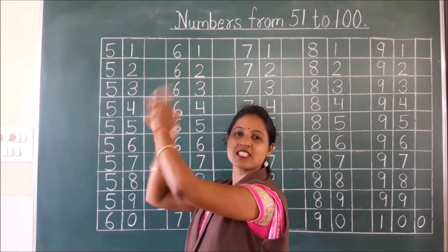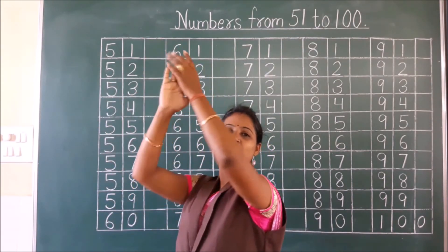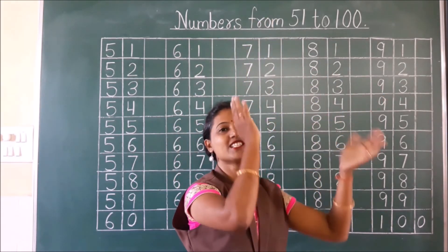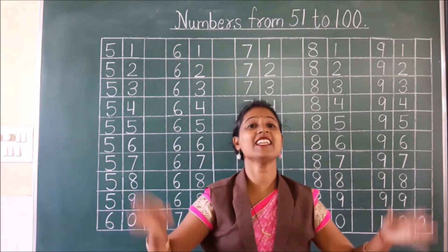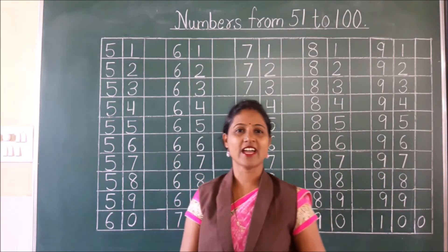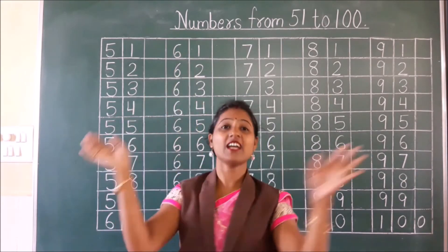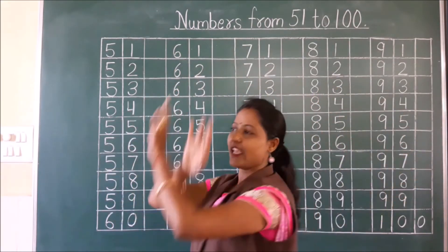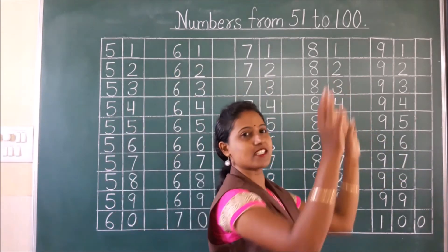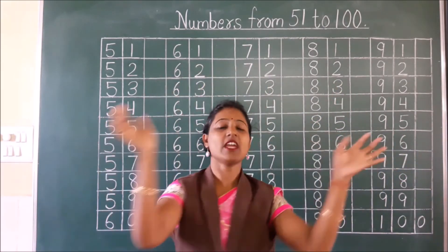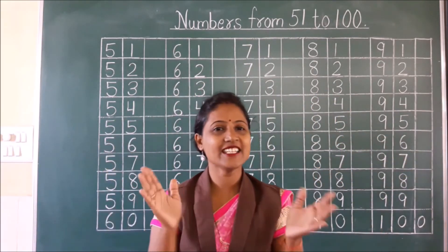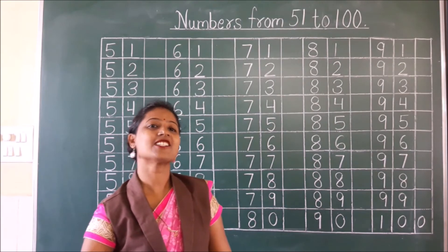Now let's do circle clap: 71, 72, 73, 74, 75, 76, 77, 78, 79, 80. Now let's wave your hands: 81, 82, 83, 84, 85, 86, 87, 88, 89, 90.